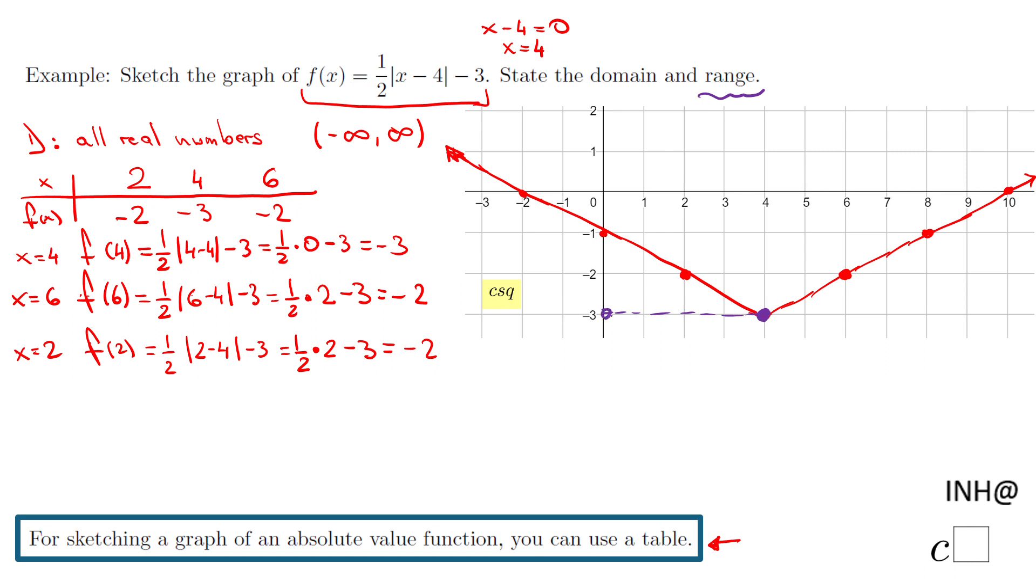By the way, this is called the vertex or a minimum. After that, you can get any other value, but it's larger than negative 3. So the range is any number greater than or equals negative 3, nothing less than negative 3.